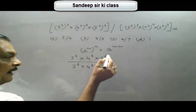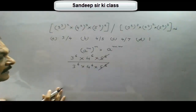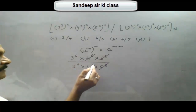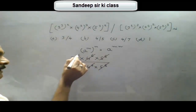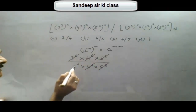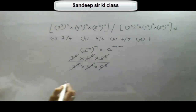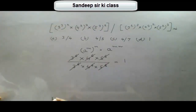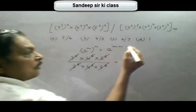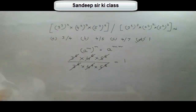Now we find that 5 to the power 6 and 5 to the power 6 cancel, 4 to the power 6 and 4 to the power 6 cancel, and 3 to the power 6 and 3 to the power 6 cancel. Hence we get the answer as 1. So option D is correct — the value of this expression is 1.